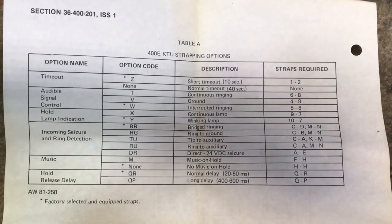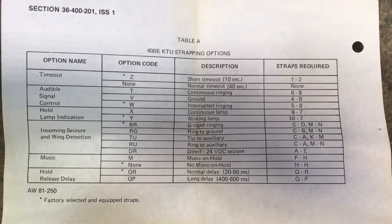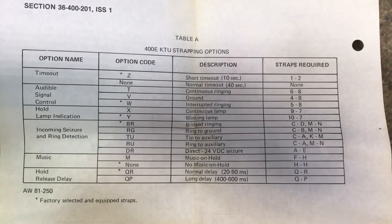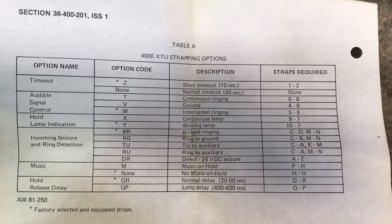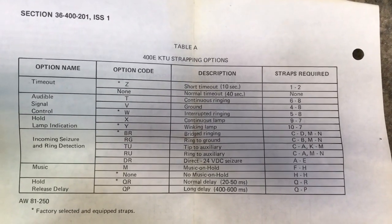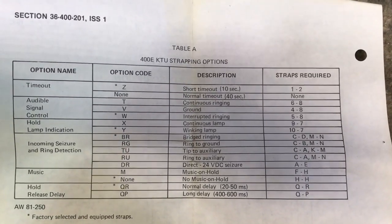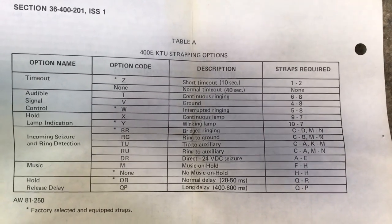This is the option chart for the ITT 400E. However, you can use this for the Western Electric 400D series, probably the Stromberg 400 series, and some of the Automatic Electric 1400.